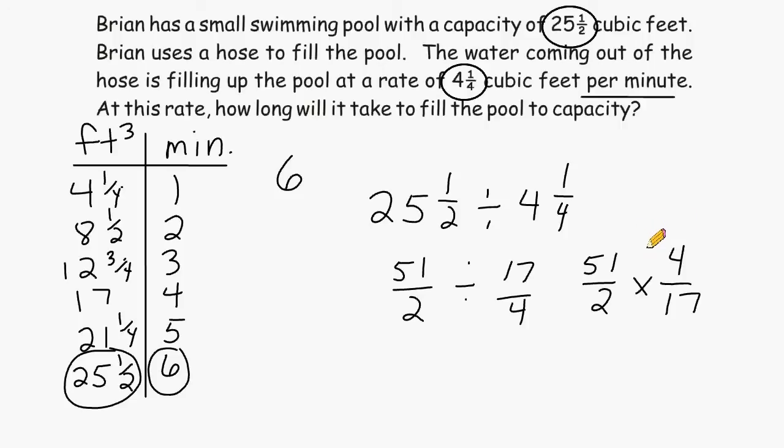Now we look for any opportunities to use cancellation, and 17 is common to 51 and 17. 17 can go into itself one time, and 17 goes into 51 three times. And 2 is the greatest common factor of 2 and 4, so 2 goes into 2 one time, and 2 goes into 4 two times.